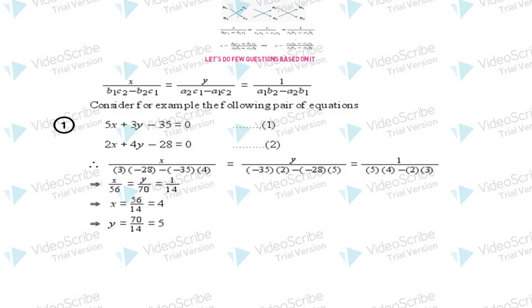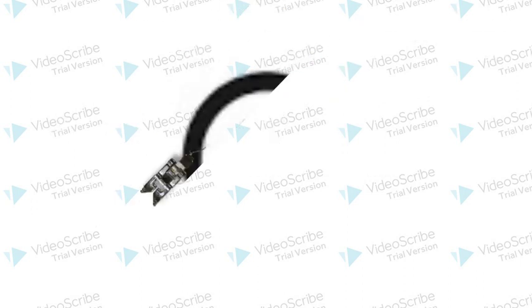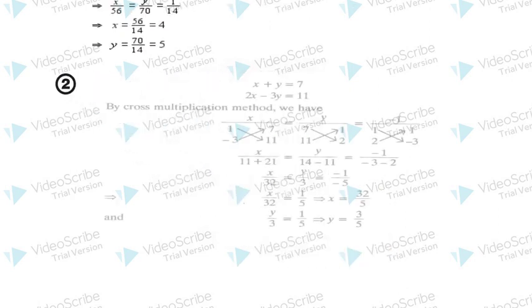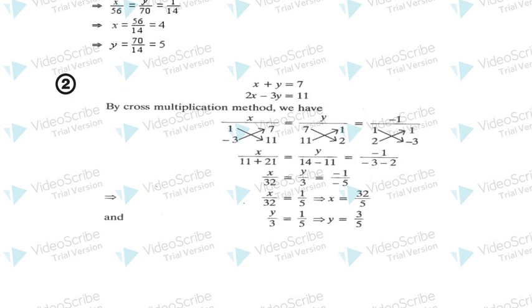Let's look at question number two. Again I have two equations: x + y = 7 and 2x - 3y = 11. Here a1 = 1, b1 = 1, c1 = 7, a2 = 2, b2 = -3, and c2 = 11. Again I'll do the cross multiplication and apply it to the formula.